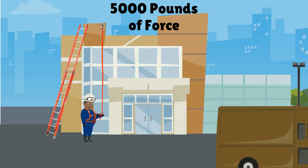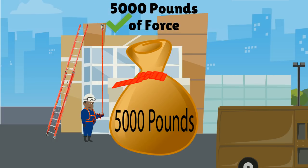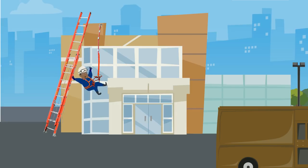The anchorage point must be able to withstand 5,000 pounds of force. If the wearer loses their balance and falls, the lifeline prevents them from falling all the way to the ground.